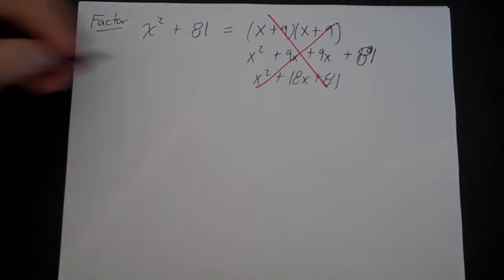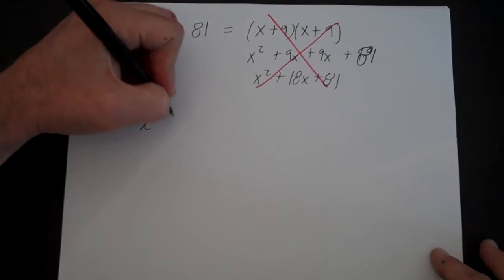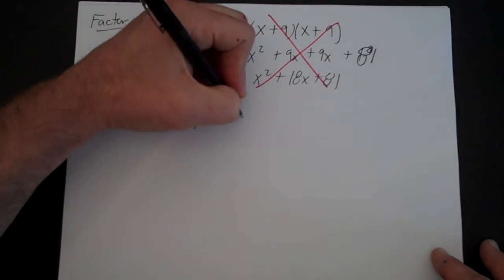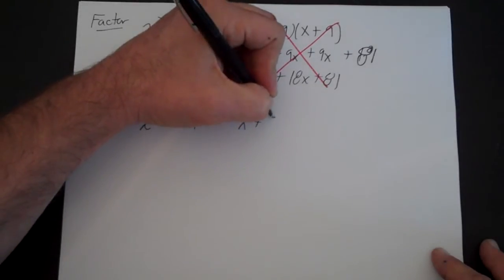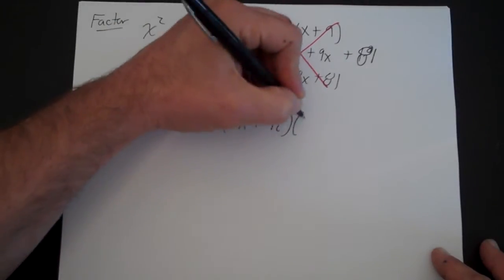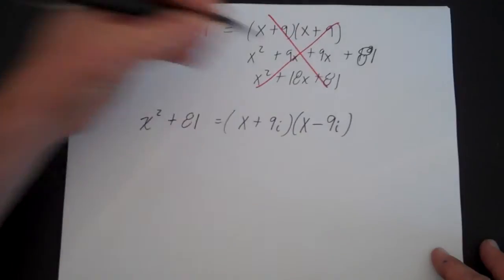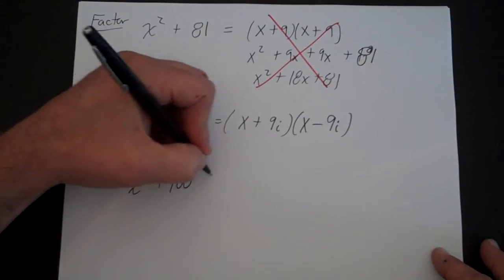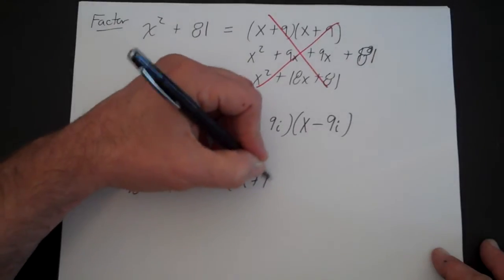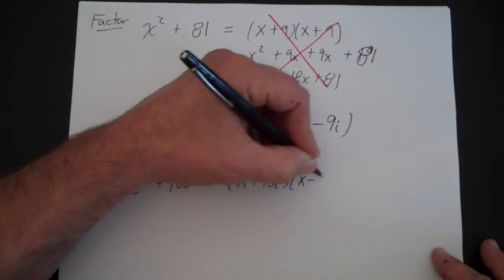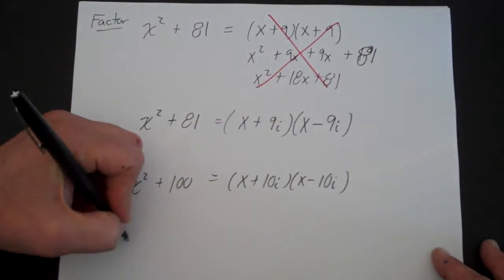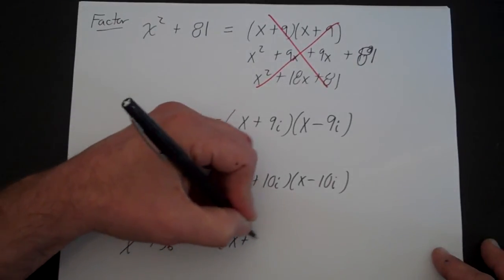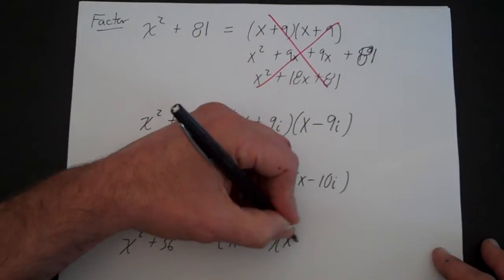The way we can factor this is by using i. If we have x squared plus 81, where we have a perfect square and a perfect square with a plus in between, it factors as x plus 9i times x minus 9i. If you had x squared plus 100, that's x plus 10i times x minus 10i. And x squared plus 36 is x plus 6i times x minus 6i. These are easy once you know the pattern.